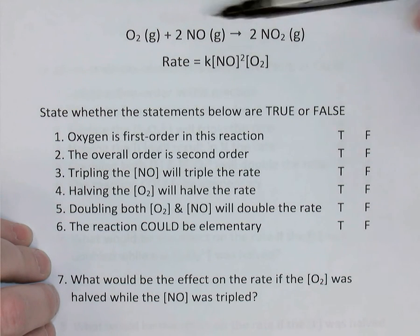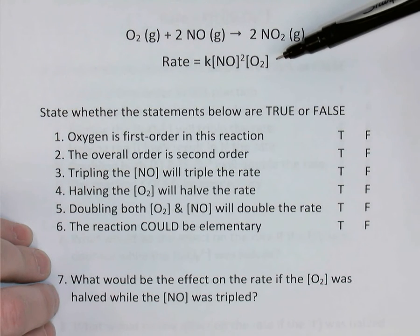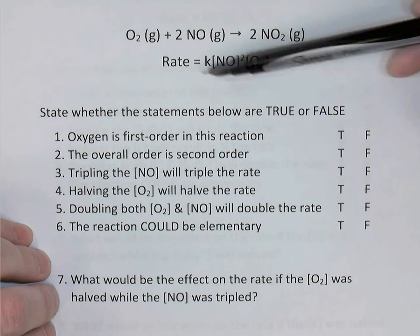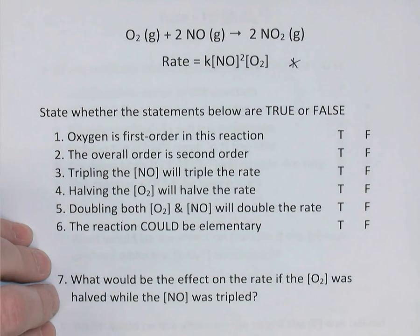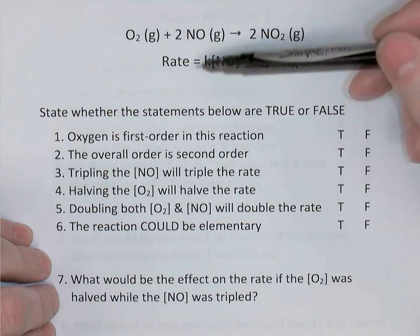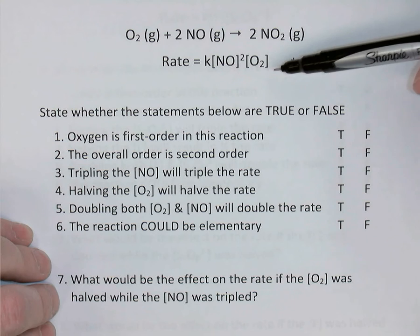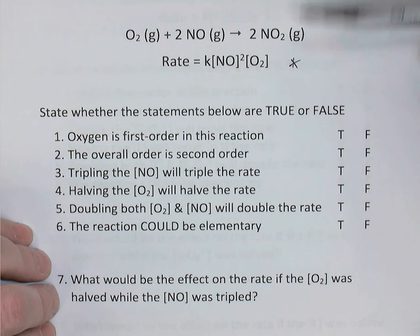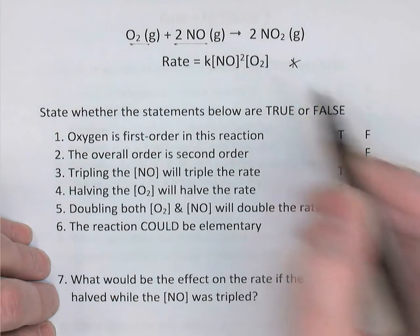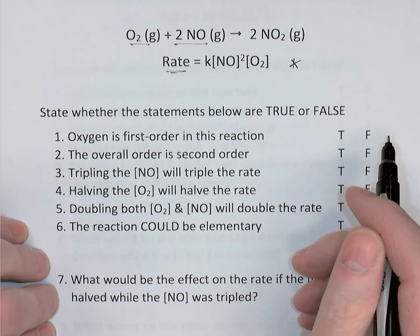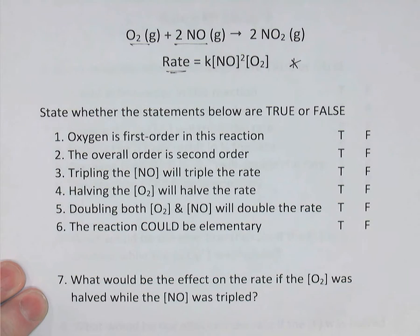In the first example, we've got a balanced equation between oxygen and nitrogen monoxide gases forming nitrogen dioxide gas, and we see a rate law given underneath — the differential form of the rate law. Rate equals a rate constant times concentration of NO squared times concentration of O₂. A rate law is a mathematical statement showing how the reactants affect the rate of reaction. Let's answer the true-or-false questions below.